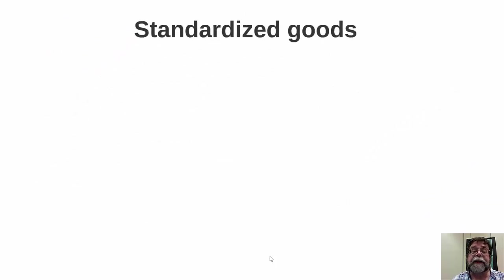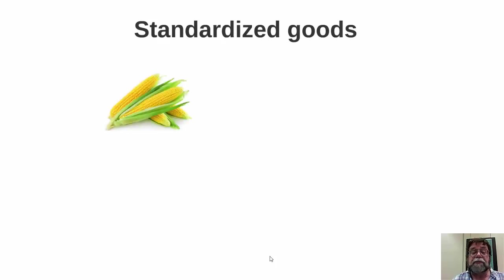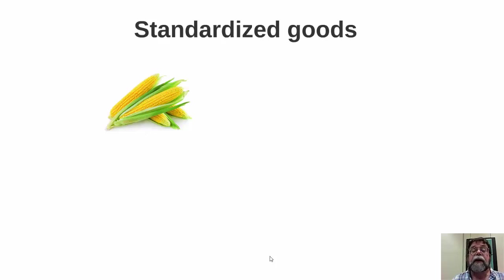When we say that a product is standardized, we mean buyers of the good don't care who they buy it from. For example, if you buy agricultural products such as a given type of corn, you don't really care which farmer produced it, as long as it's the type you want and equally fresh. You don't really care about the brand name — in fact, there often is no brand name.